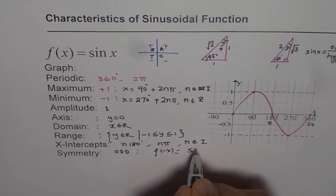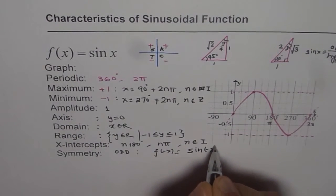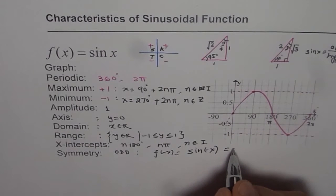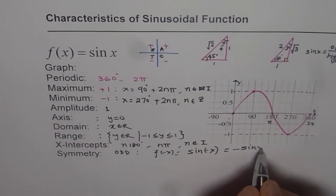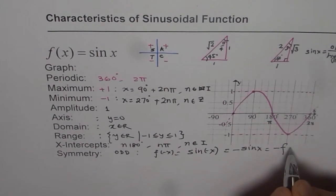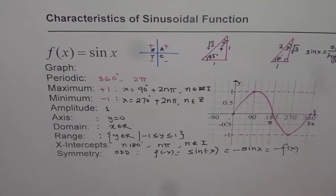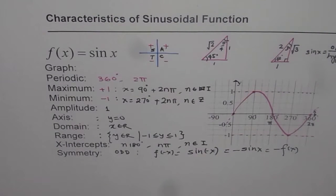f of minus x is sine of minus x. Now sine of minus x is minus sine x, which is minus f of x. Because sine x is fx, so it has odd symmetry. So that helps us to understand the basics about the characteristics of sinusoidal function.